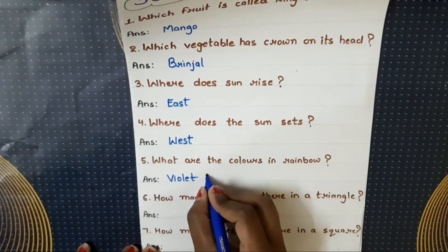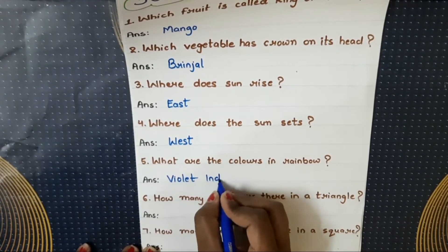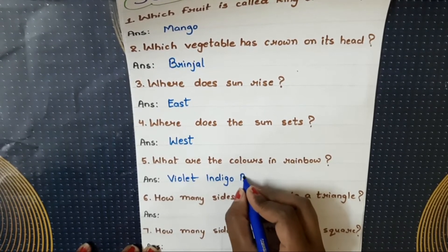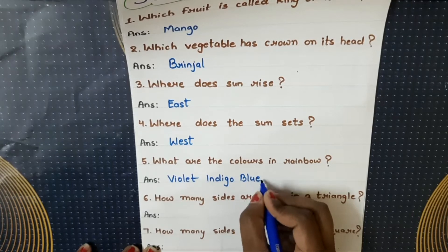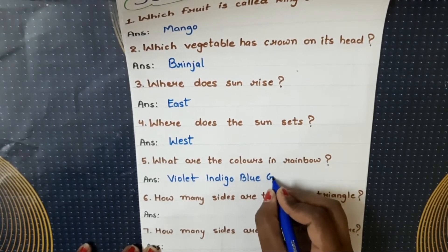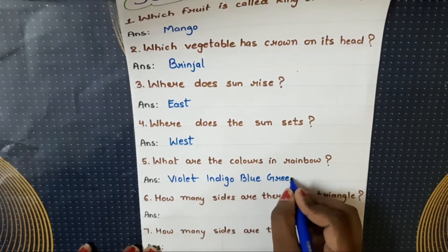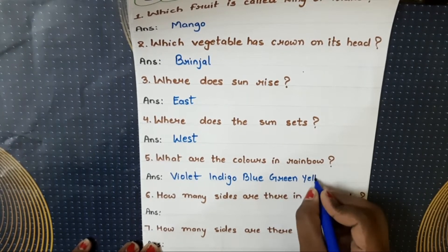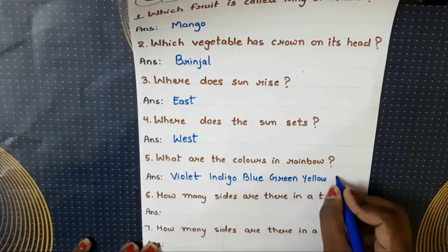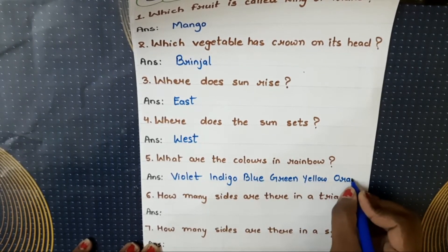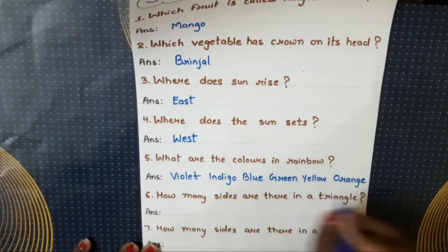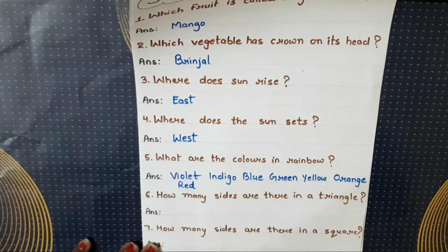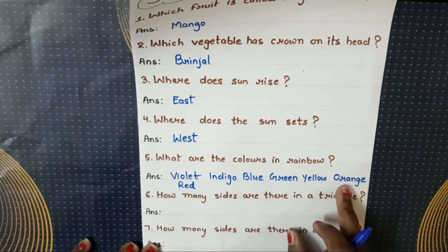indigo, blue, green, yellow, orange, and red. So there are seven colors in a rainbow.